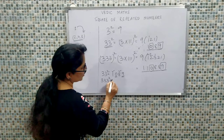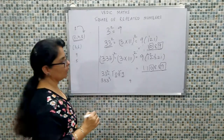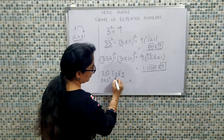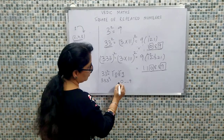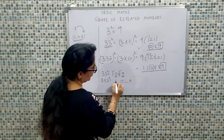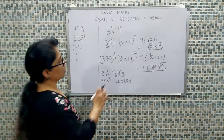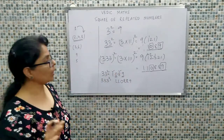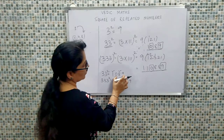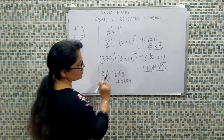Similarly, agar triple three ka square nikaalna hai — pahle teen ka square nine likh lenge. Bache doh threes, to yahaan doh place chhod denge. Zero fix hai. Zero ke pahle kitni values? Two. So one will be repeated twice, and eight will be repeated twice. The pattern: three ka square gives zero nine as fixed, single three gives single one and single eight.